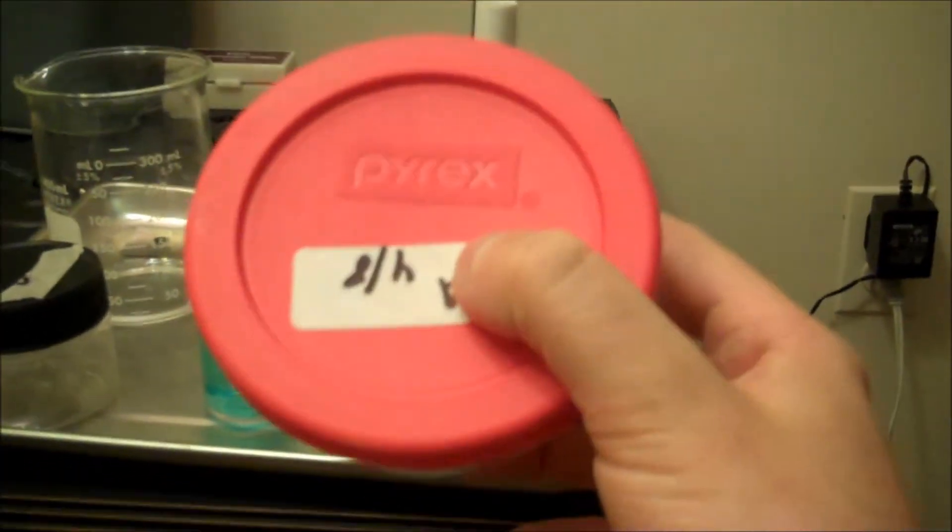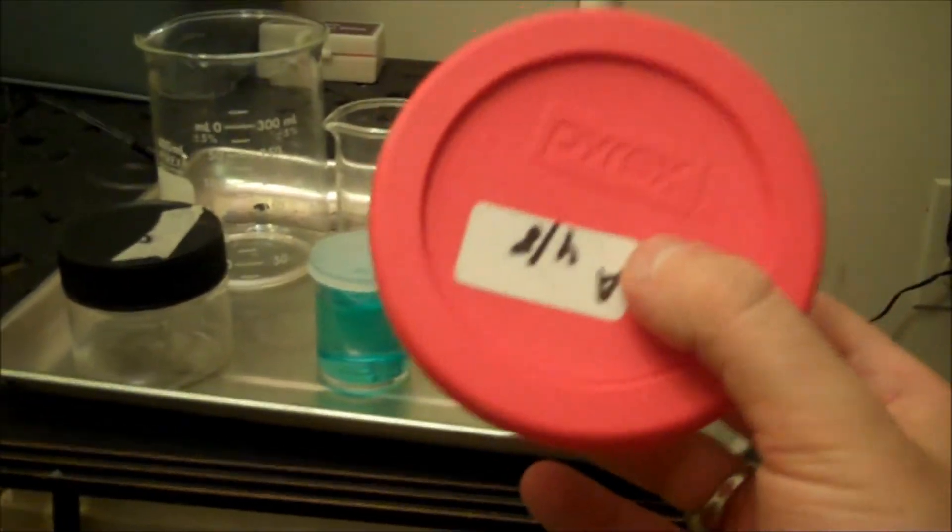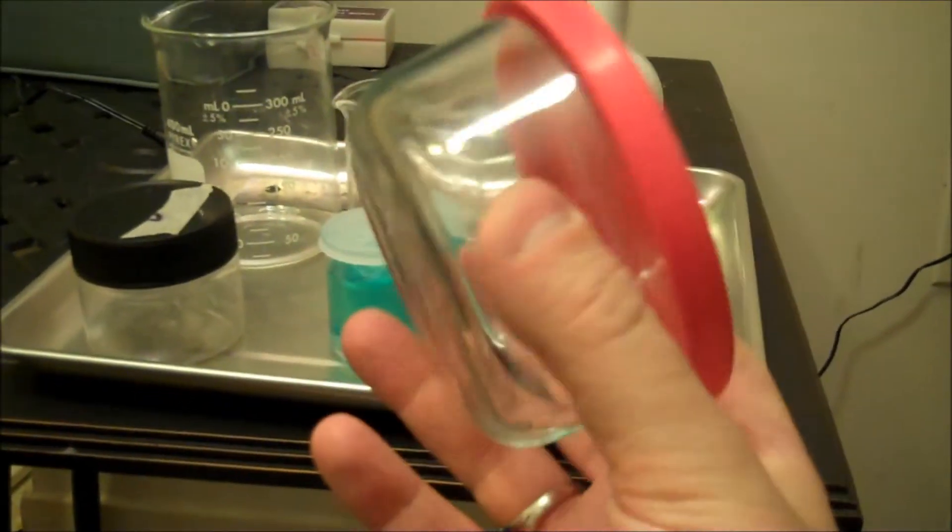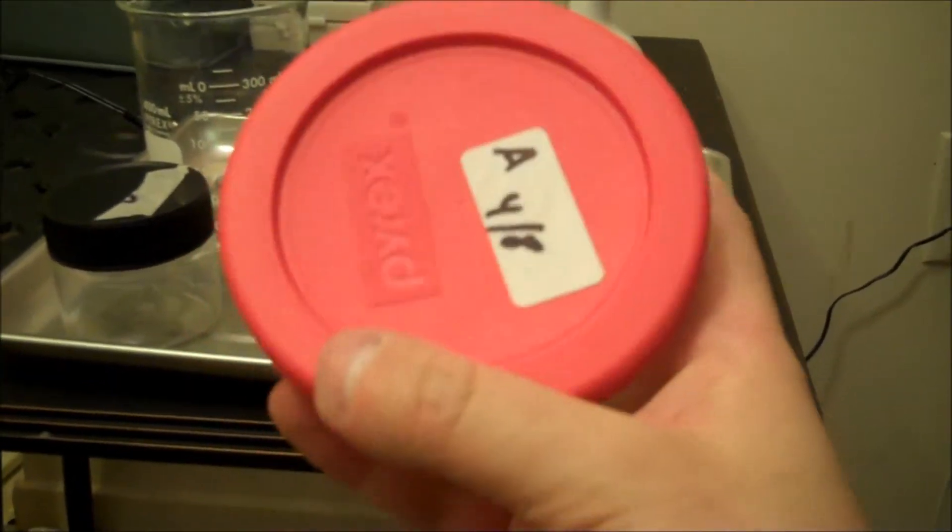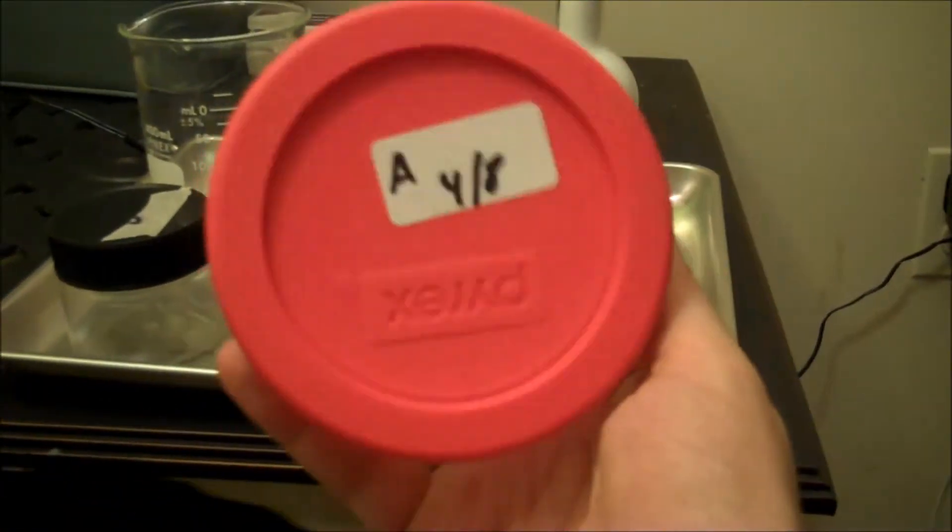It turns out this is not boron silicate Pyrex. This is, and what's weird to me is that it's called Pyrex, but it's actually soda lime. So it's sodium and, and what is lime? Calcium, I think. So this right here is not borosilicate glassware. I bought it at the store thinking to myself, cheap petri dish.